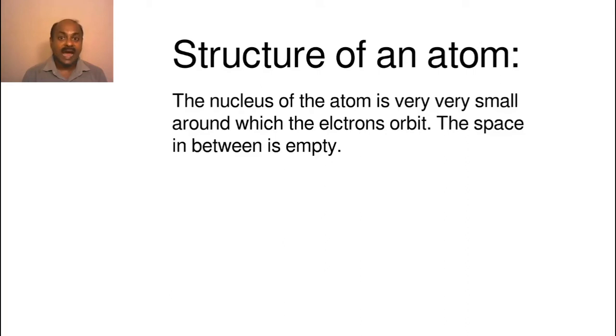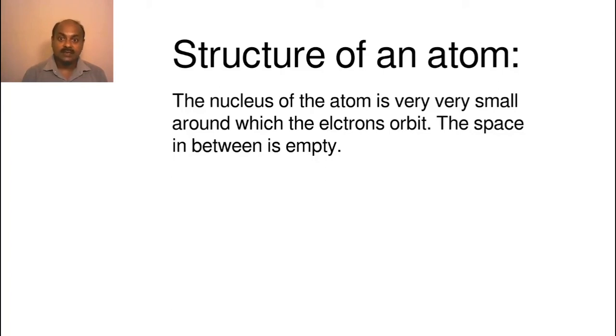The nucleus of the atom is very tiny and electrons orbit around it. In between is all empty space. The electrons have no mass at all. All the mass of the atom is in the nucleus with the protons and the neutrons.